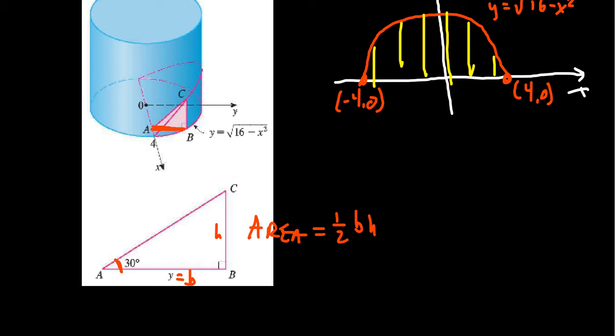The base is just going to be the Y coordinate. So we're going to get one half Y times the height. How can we figure out the height of this thing? Well, that's where the 30 degree angle comes into play. A tangent ratio would be very useful here. Tangent of 30 degrees is going to equal opposite over adjacent. The opposite side is H. The adjacent side is Y. Clearing the denominators, we actually see that the height will equal Y times tangent of 30 degrees.